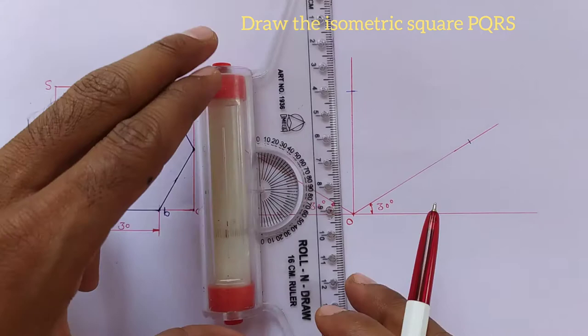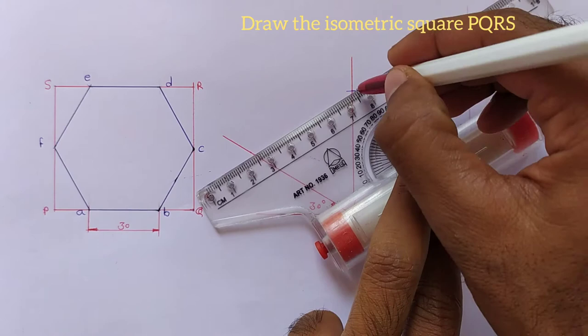Now set scale parallel to this line and draw vertical line. Similarly draw the line from this point. PQRS. This is the isometric square.